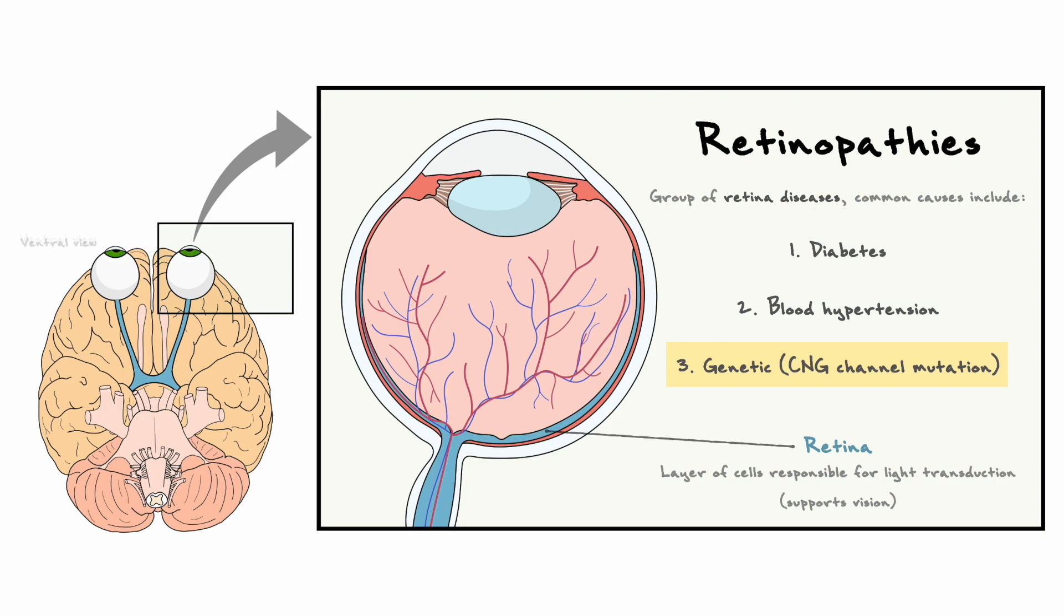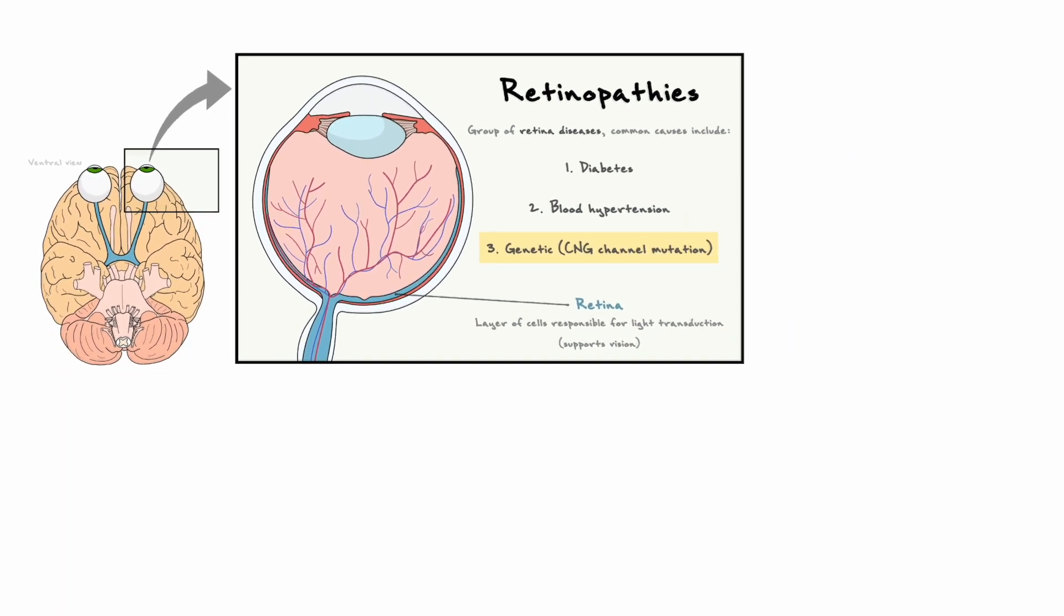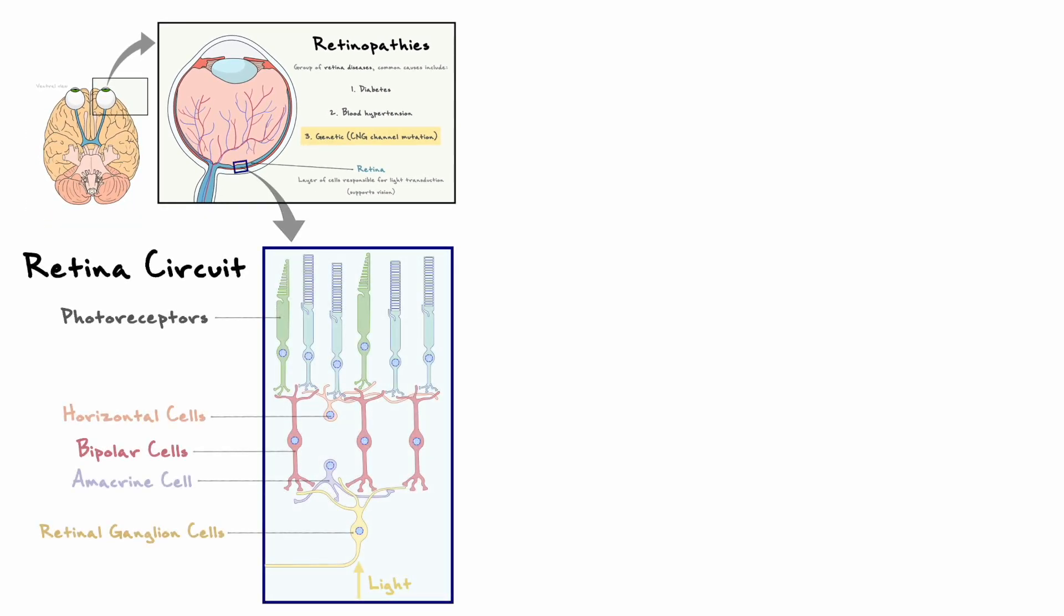To understand how this mutation affects the eye, it's first important to understand the context in which these proteins are relevant. To do so, we need to consider the retina in more detail, where we can find different types of cells forming complex networks.